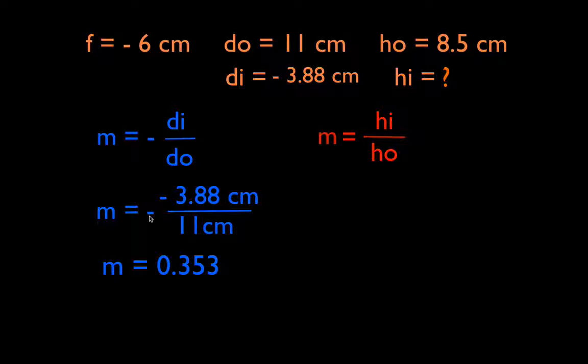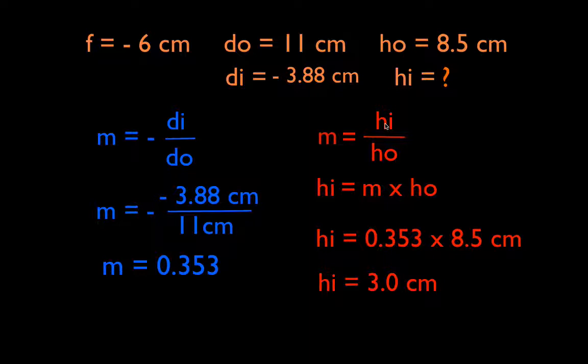We can use the other magnification equation: image height divided by object height equals magnification. Solving for image height, we get image height equals magnification times object height. Plugging the numbers in, we get that the image height is positive 3 centimeters. The object is 8.5 centimeters tall and the image is smaller. This is positive 3, which means it has the same orientation as the object — not inverted. That means the orientation is the same as the object, and it's smaller.